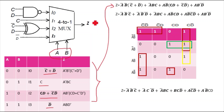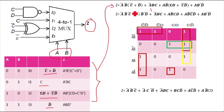Now we need to minimize the Z function. Opening (expanding) the terms: A-bar·B-bar·C-bar plus A-bar·B-bar·D-bar, plus A-bar·B·C, plus A·B-bar·C·D plus A·B-bar·C-bar·D-bar, plus A·B·D-bar. Now we'll fill a K-map, as it's the easiest way to simplify this kind of expression.